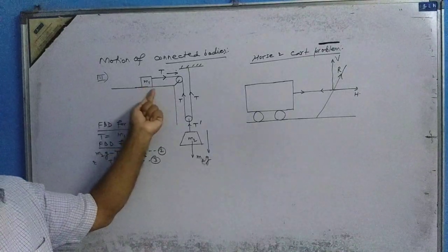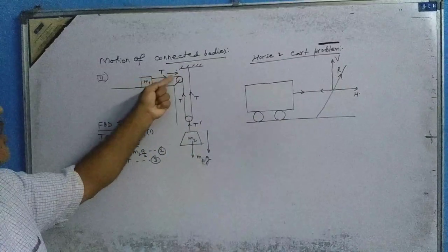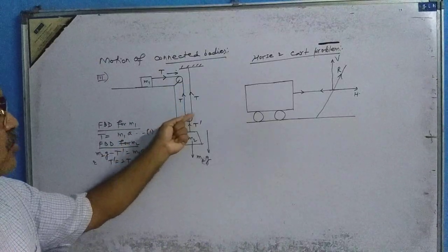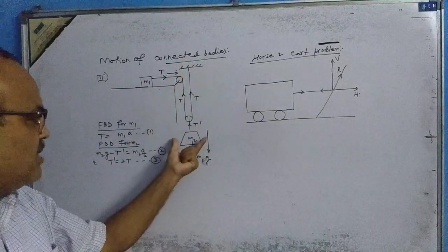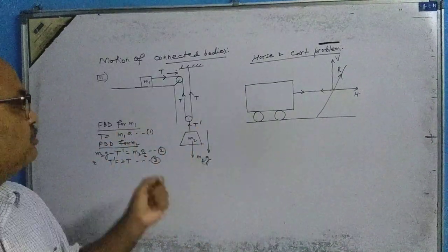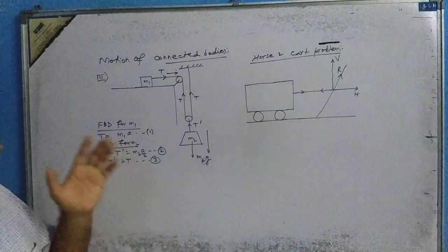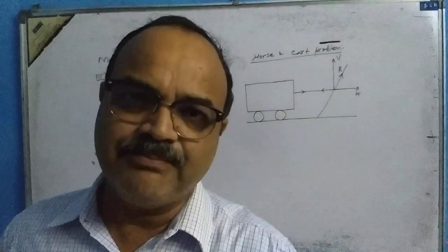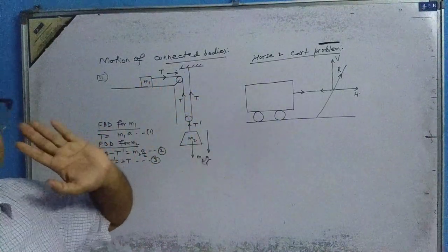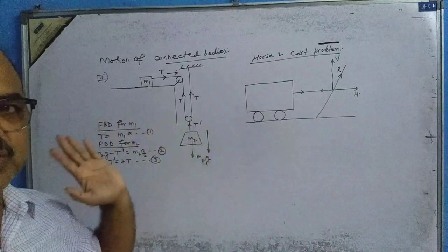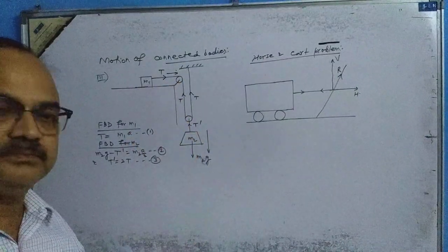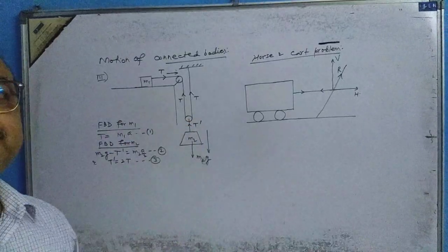Here, mass m1 is placed on a table — I am not considering friction. It is tied to a string passing over a fixed pulley, then moving through a movable pulley, going to the fixed support. A mass m2 is also hanging from the movable pulley with another string. As long as the string is the same, tension T remains the same; where the string changes, tension becomes T dash. If we release m2, it will move down.